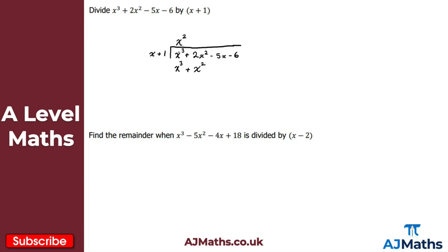Now that I've got two columns matching I'm going to subtract. x cubed minus x cubed gives zero. Then 2x squared minus x squared leaves me with positive x squared.